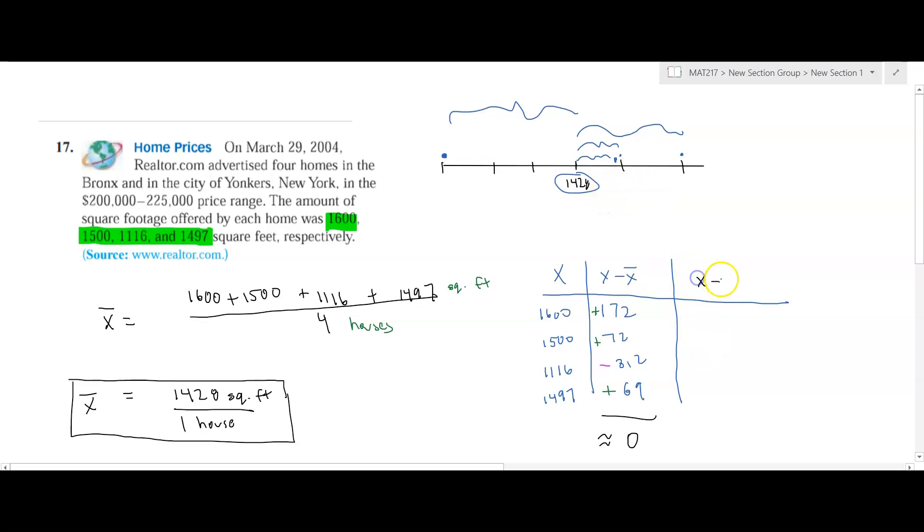And now what we need to do is we need to square these values. And the reason we do that, there's some statistical reasons. That's what makes this what we call an unbiased estimator for the population, but it also removes the sign. In statistics, we don't take absolute values of negatives because it creates some other mathematical problems that we won't get into. This comes out to 29,584. 72 squared is 5,184. 312 squared is 97,344. And 69 squared is 4,721.